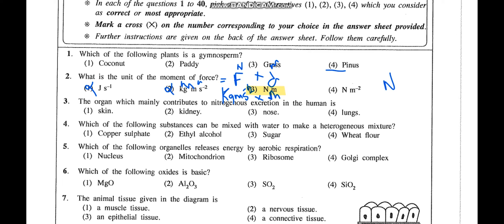Question 3: Which organ mainly contributes to nitrogenous excretion in the human body? The answer is the kidney. The skin does also excrete nitrogenous waste through sweat, but they are asking which organ mainly contributes, so the answer is the kidney.